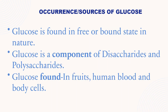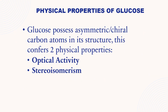Occurrence and sources of glucose. Glucose is found in a free or bound state in nature. Glucose is a component of disaccharides and polysaccharides. Glucose is found in foods, human blood, and body cells.